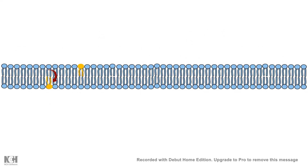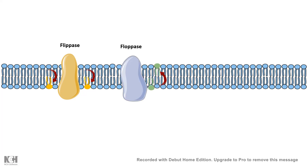The flip-flop or trans-bilayer movement — from the outer leaflet to the inner leaflet — can happen with the help of several enzymes. Flipase facilitates outer-to-inner movement, flopase facilitates inner-to-outer movement, and scramblease facilitates bidirectional movement. Membrane fluidity and types of membrane movement are dependent upon several proteins, as well as spontaneous diffusion.